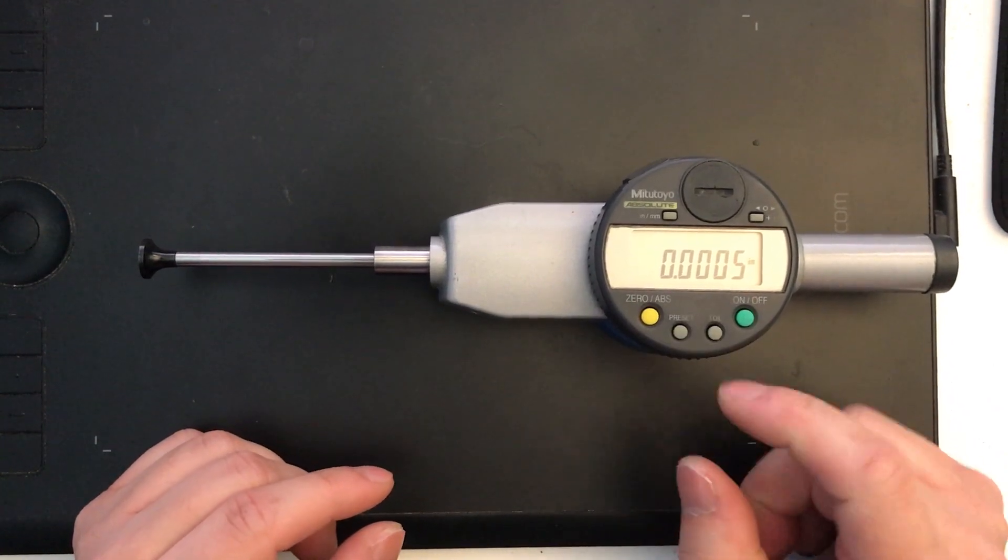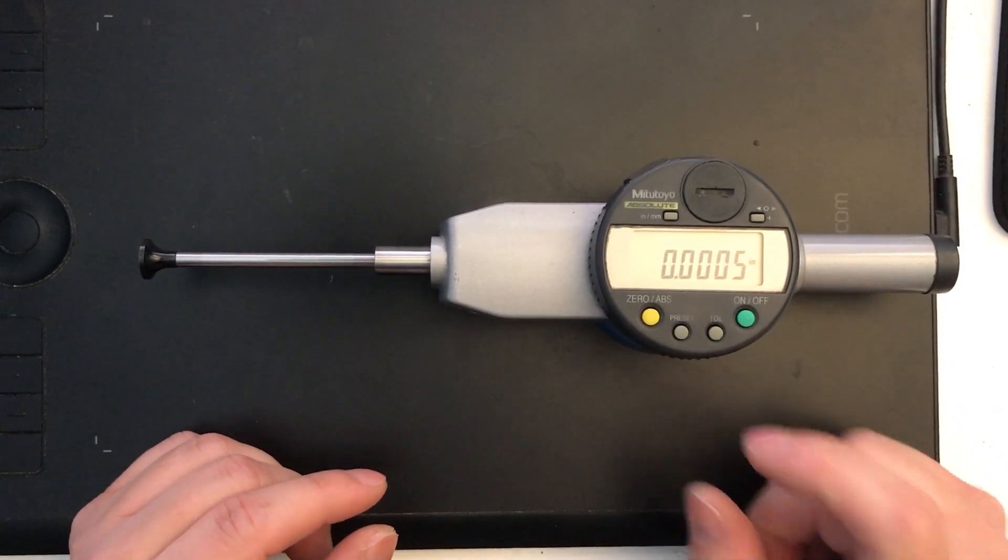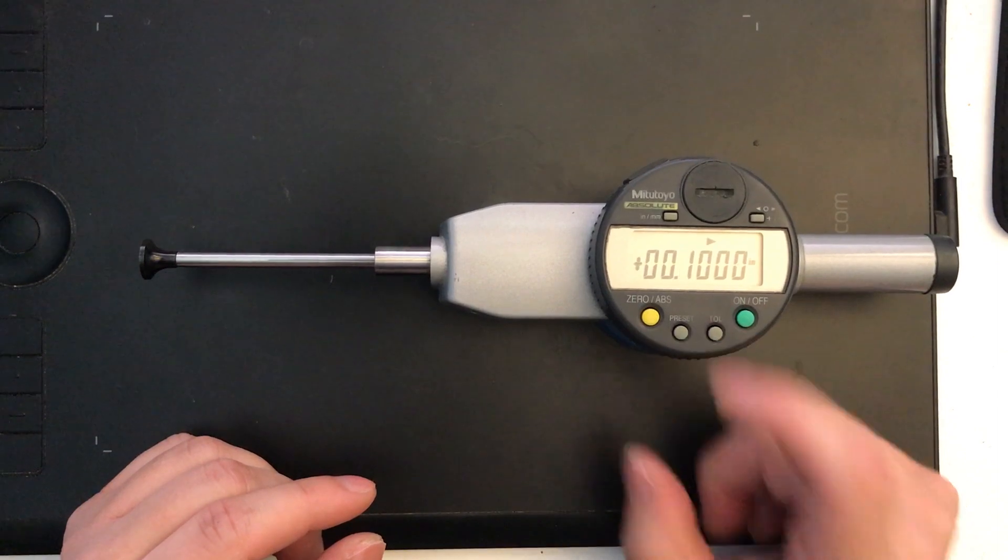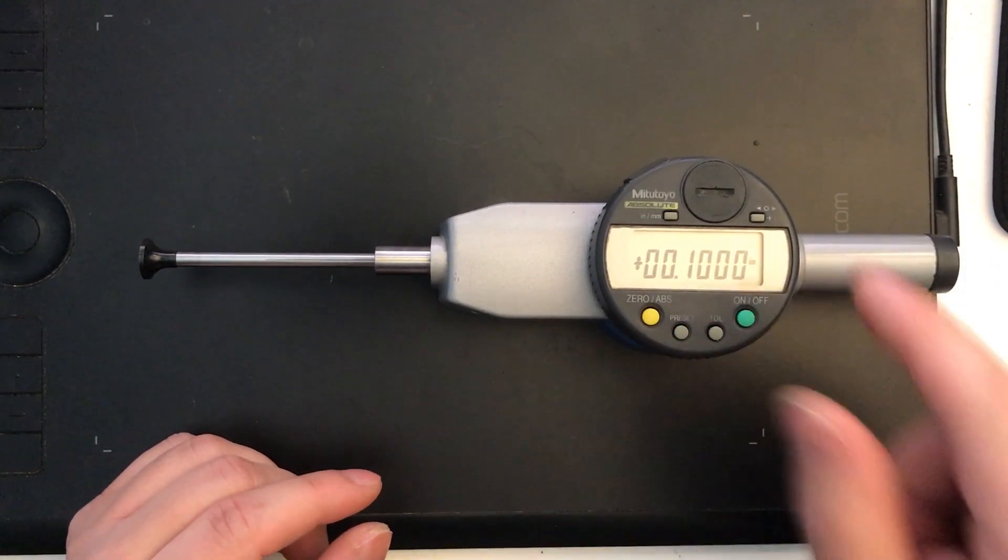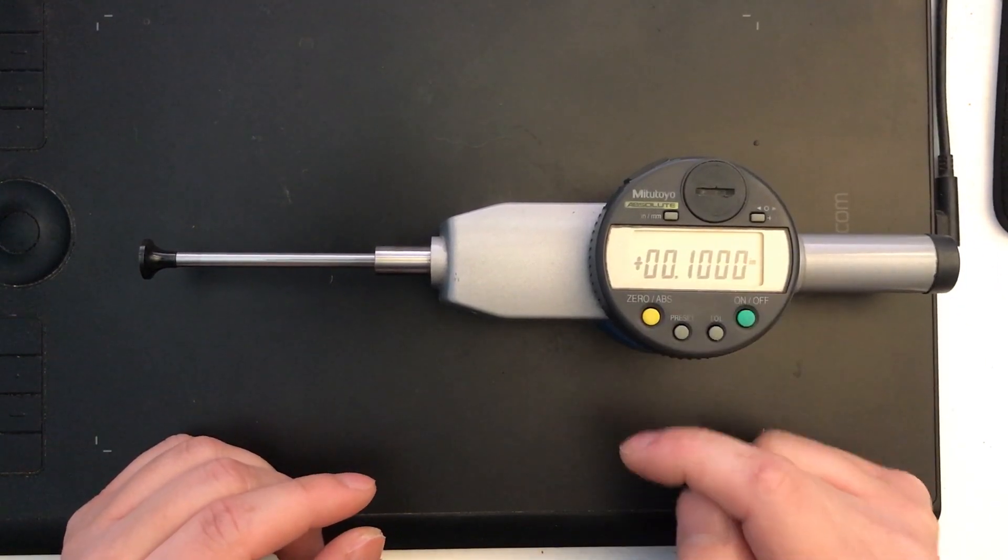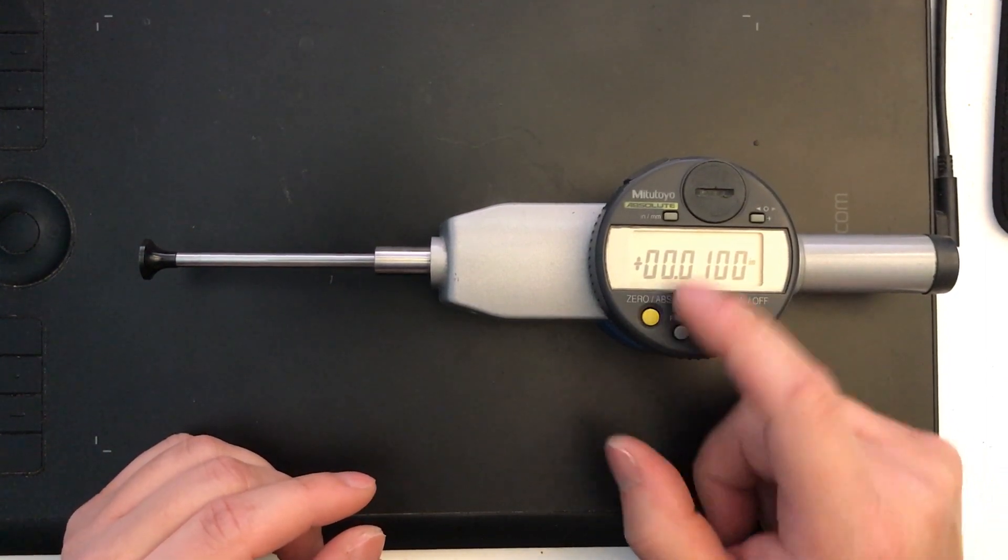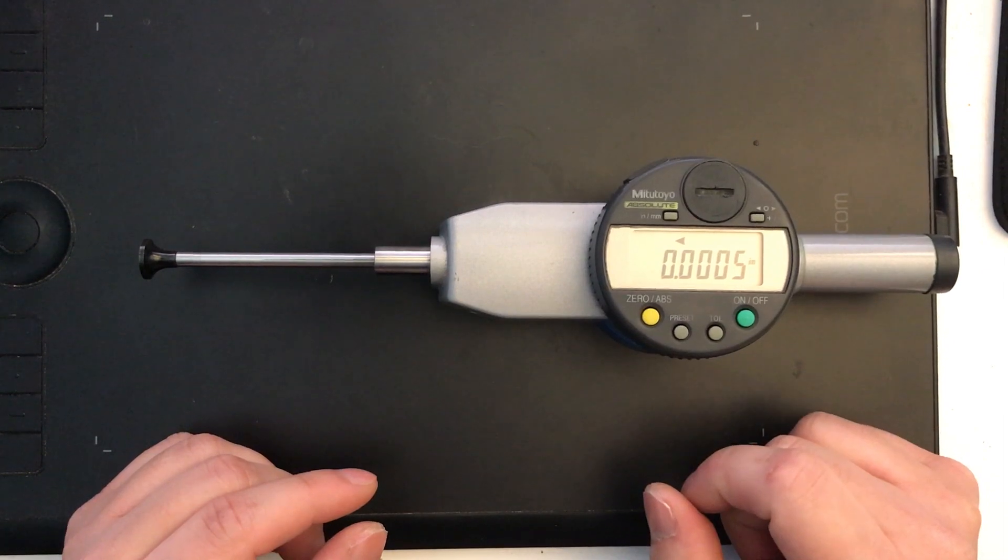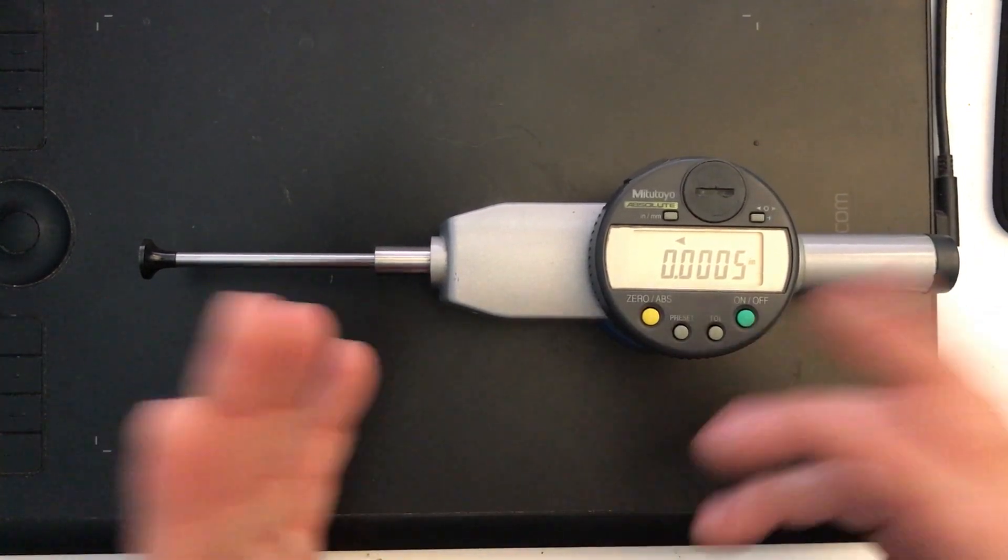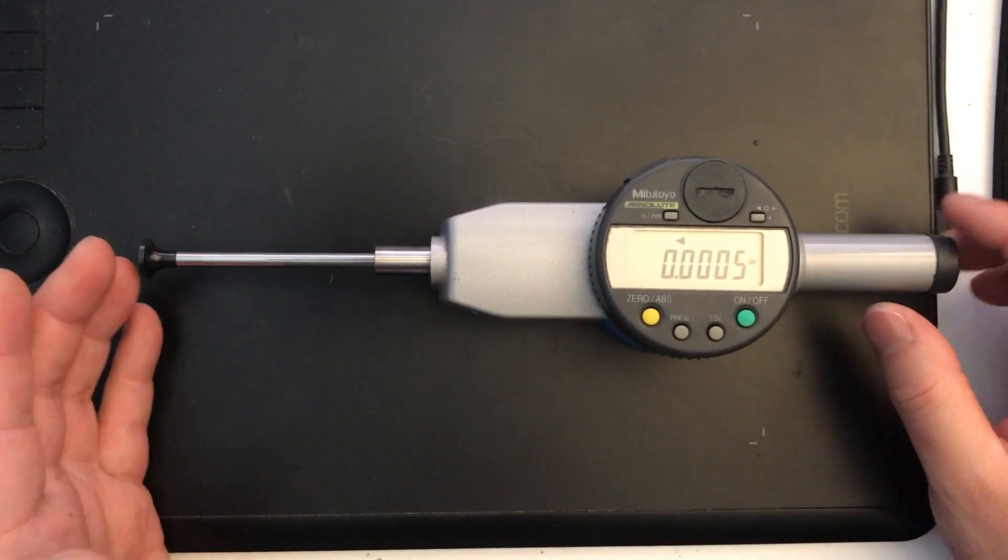Now I've gone ahead and pre-programmed my tolerance levels in, so I'll show you what that looks like. To activate it, you hit your tolerance button. It takes you right into the tolerance editor here. So now this first thing is telling me what my upper tolerance is. Tapping it again tells me my lower tolerance, and then tapping it there allows it to be ready to use. So I'll just show you what that looks like there.